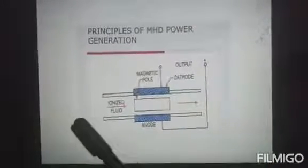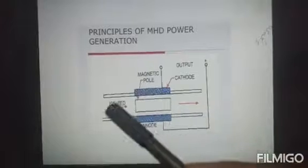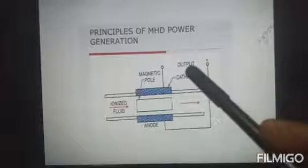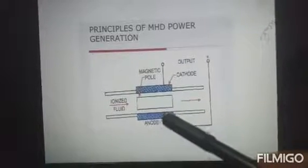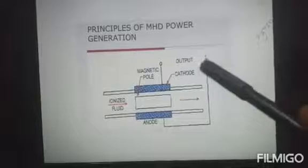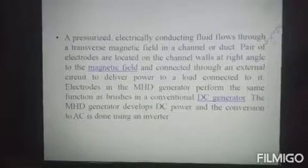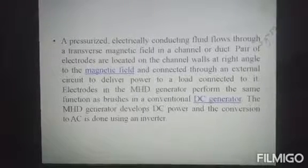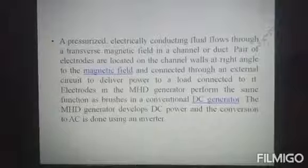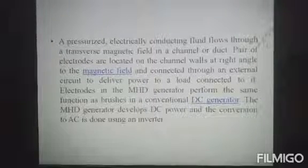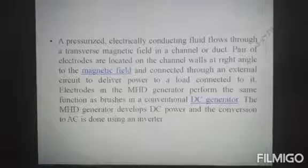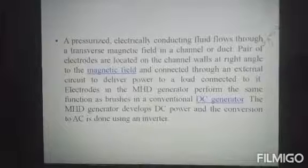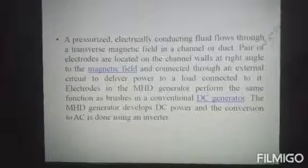The magnetic field is applied across the channel. The electrically conducting fluid flows through the transverse magnetic field in a channel or duct. A pair of electrodes are located on the channel walls at right angles to the magnetic field and connected to the external circuit to deliver power to the connected load.